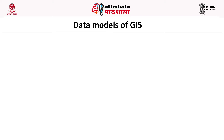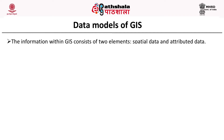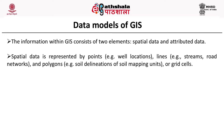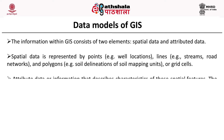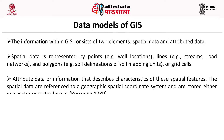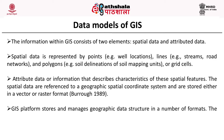Coming to the data models of GIS, the information within GIS consists of two elements: spatial data and attribute data. Spatial data is represented by points — for example, location of wells — lines such as streams and road networks, and polygons such as soil delineation or grid cells. The attribute data describes the characteristics of these spatial features. Spatial data are referenced to a geographic coordinate system and stored in vector or raster format, as given by Burrow in 1989. The three basic data formats are vector, raster and triangulated irregular network, called TIN.